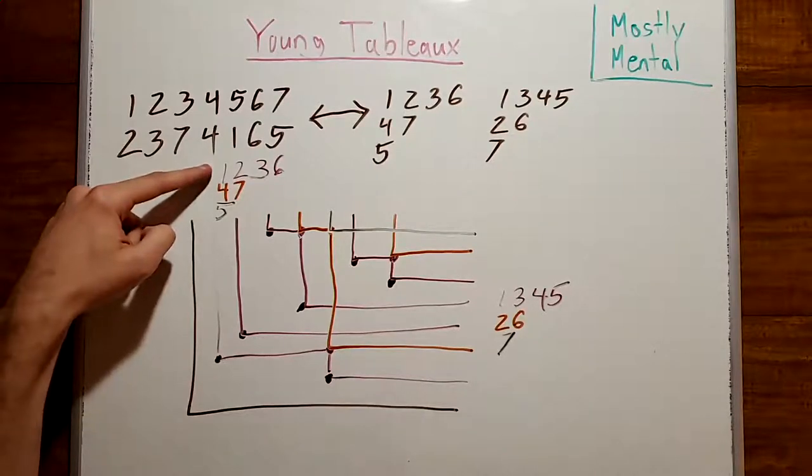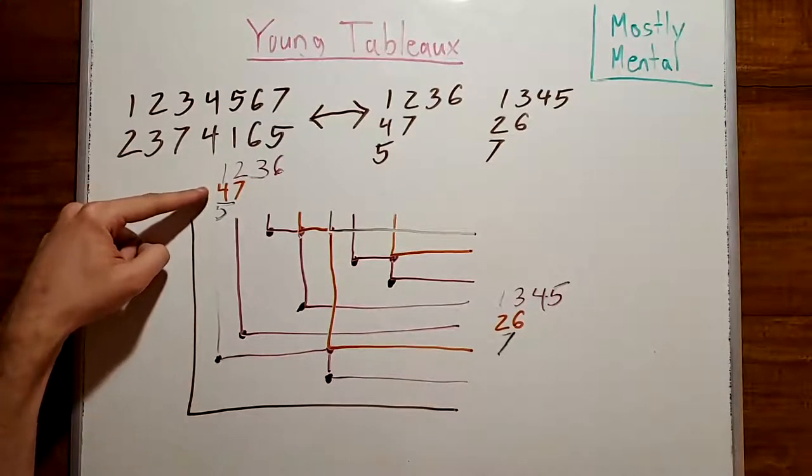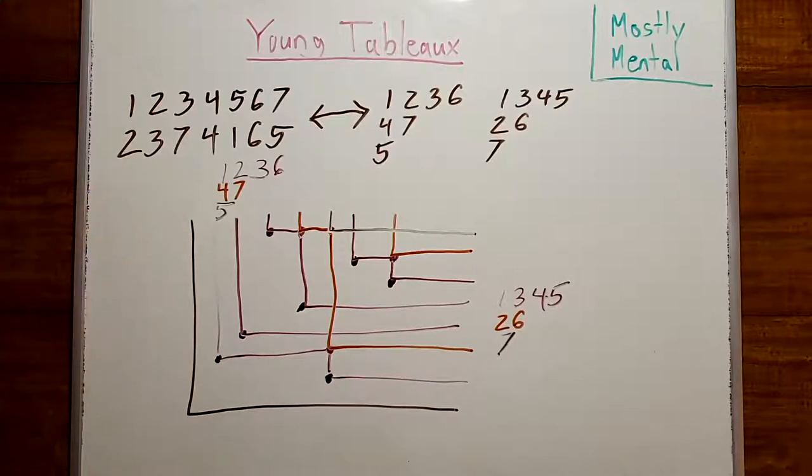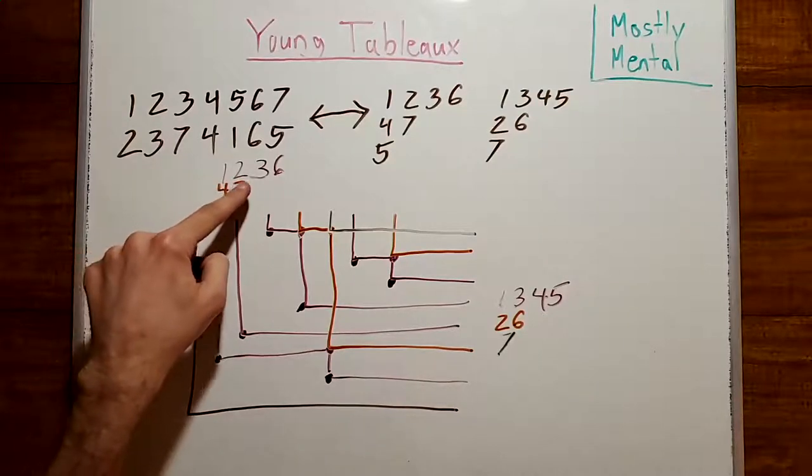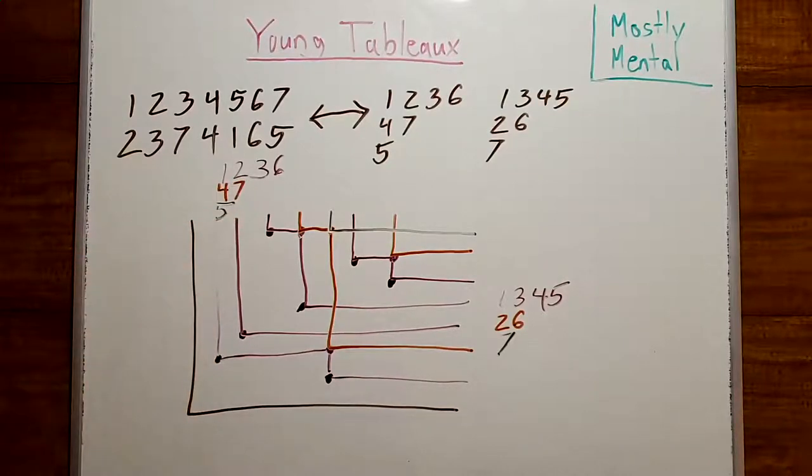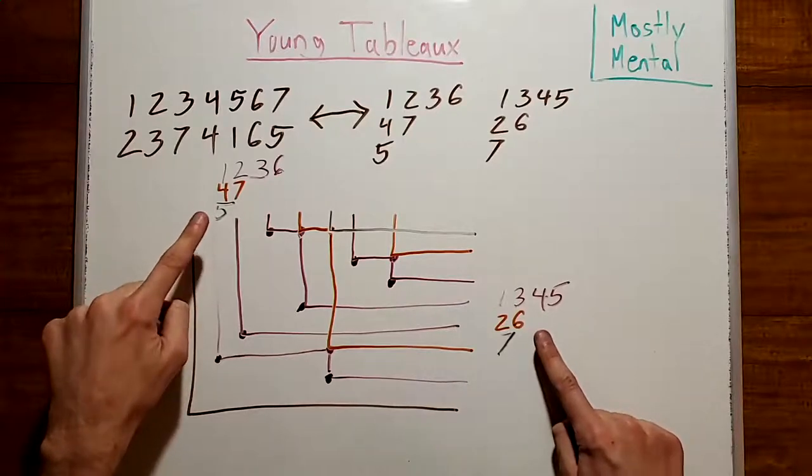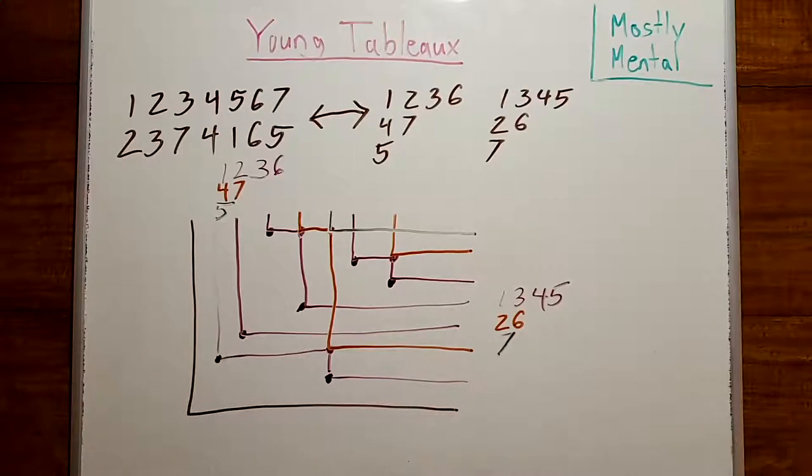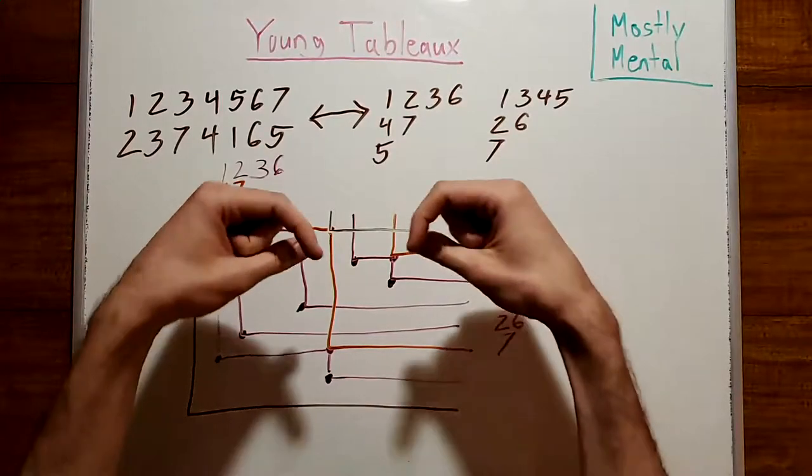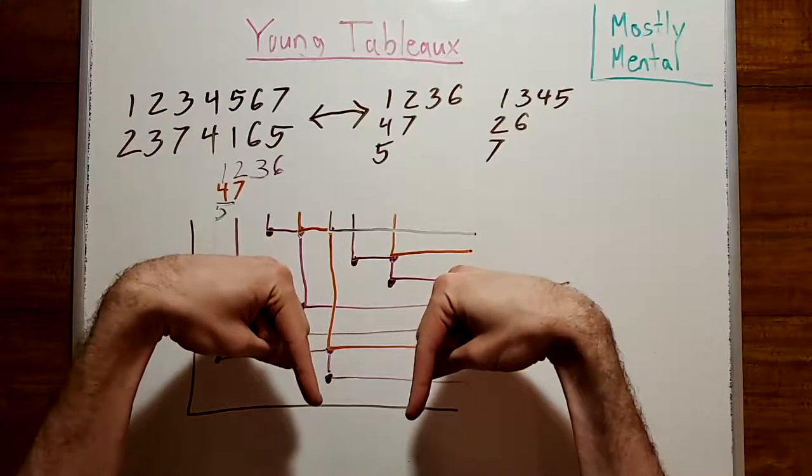Notice that the numbers we've written down from each round, when we stack them all together, give us a valid tableau. That is, each number is smaller than the ones below it, and to its right. And further, the two tableaux we end up with have the same shape. It turns out that's not a coincidence. It's always going to be true, regardless of the permutation we started with. And it's not too hard to show this, so I recommend as an exercise, proving it in the comments below.